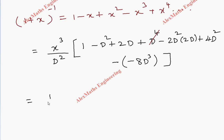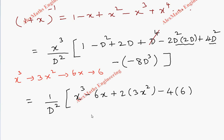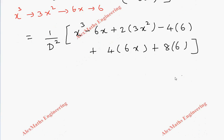Now we multiply inside and apply the D operators to x³. Differentiating x³ twice gives 6x; with the minus sign outside we get -6x. The 2D term gives +2·3x² = 6x². The 4D² term on x³ gives +4·6x = 24x. The -8D³ term gives -8·6 = -48.